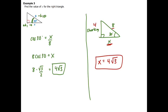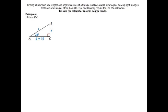Example four: solving a triangle means finding all three side lengths and all three angles. We have triangle ABC and need two side lengths and one more angle. Let's start with angle B. Since the triangle has 180 degrees total, angle B equals 180 minus 90 minus 28, which gives us 62 degrees.